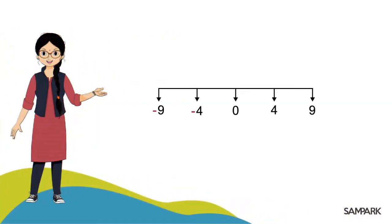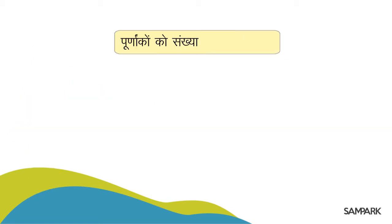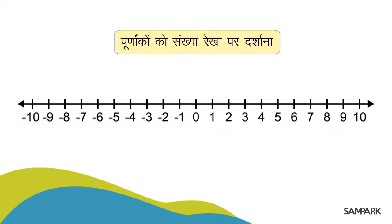Screen pe dikhai de rahi ye sankhyaen kya hain? Bilkul thik pahachana — ye sabhi Poonank hain. Aur Poonankkon ko Sankhya Rekha par darshana aapko pata hai. Dekhiye, ye raha 9, ye 4, 0 se baayin aur ye raha minus 4, aur ye minus 9.